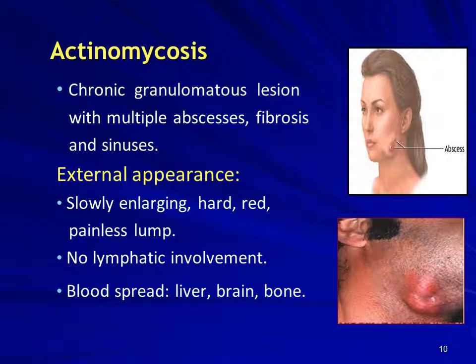The disease is a chronic granulomatous lesion with multiple abscesses, fibrosis at the site of involvement, and sinus formation. The lesions are slowly enlarging, hard to touch, red in color, and painless lumps. There is no lymphatic involvement, so no enlargement of regional lymph nodes. Blood spread is possible to the liver, brain, and bone.